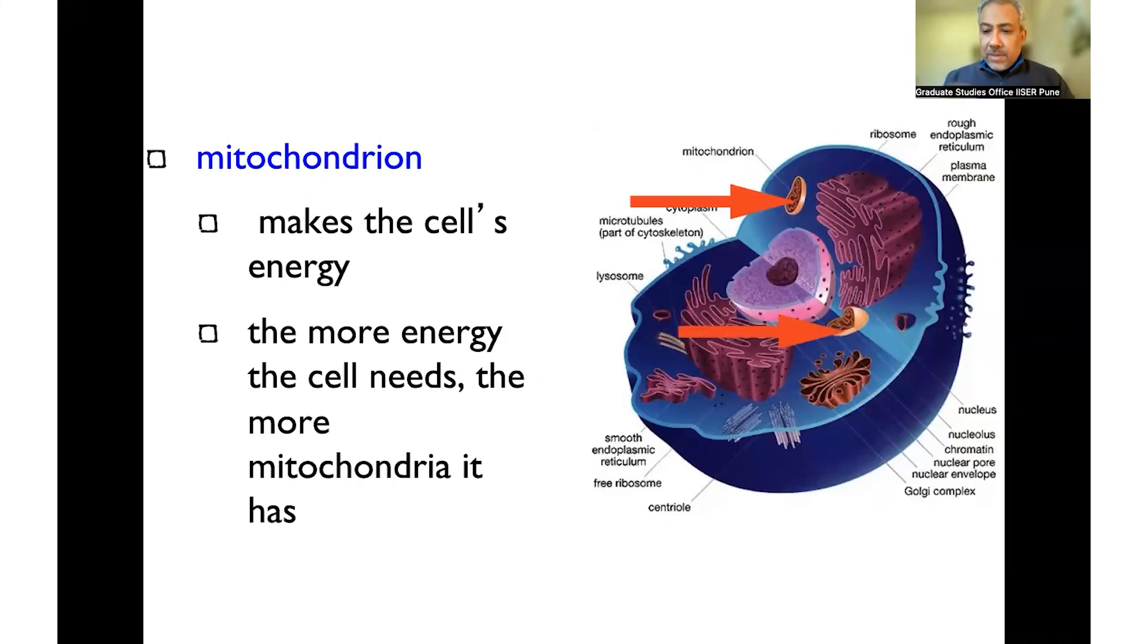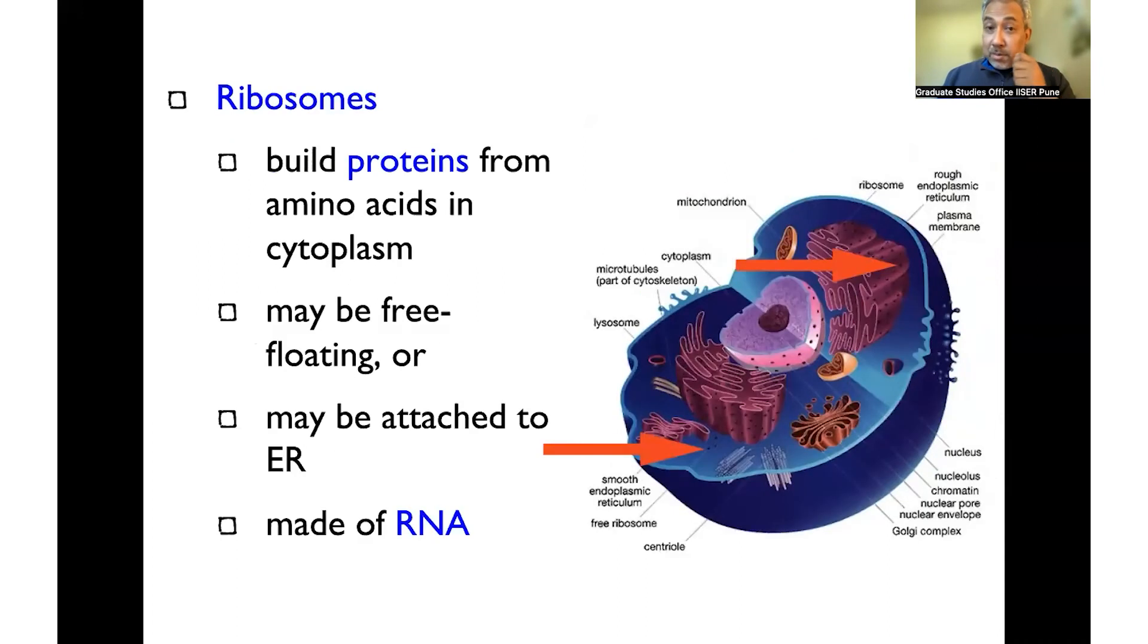We have the energy centers of the cell, which are mitochondria, which actually also form a very interesting basis of the theory of how complexity may have evolved. And we'll come to that theory at the end of this particular class. And we'll discuss that at length in the next class as well. So the mitochondria are another important players.